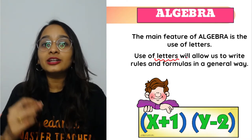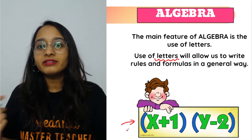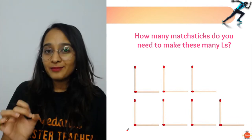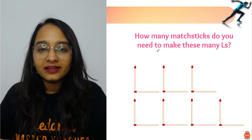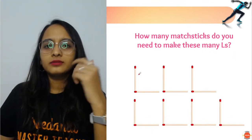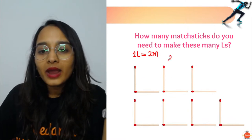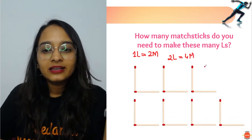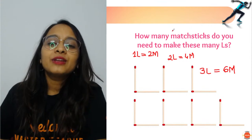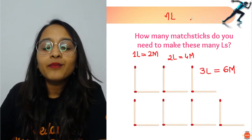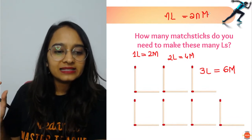Things like x plus 1, x multiplied with y, minus 2 — all of this is algebra. Algebra is that branch of mathematics which deals with letters and alphabets. For example: how many matchsticks do you need to make these L shapes? To make one L you need 2 matchsticks, to make two L's you need 4, three L's needs 6. So if I have to make n number of L's, I need 2 multiplied with n matchsticks.